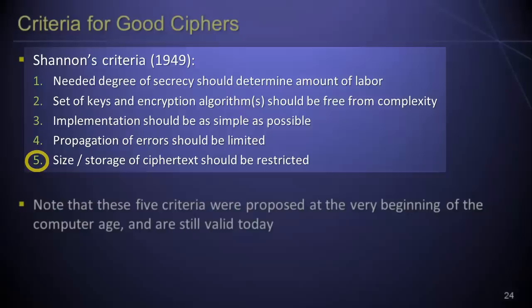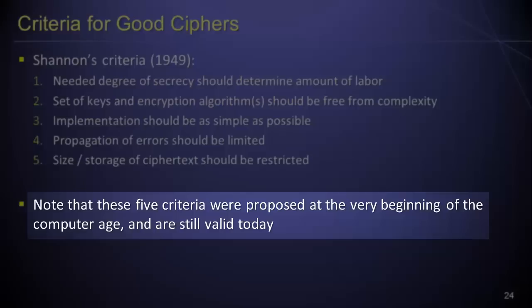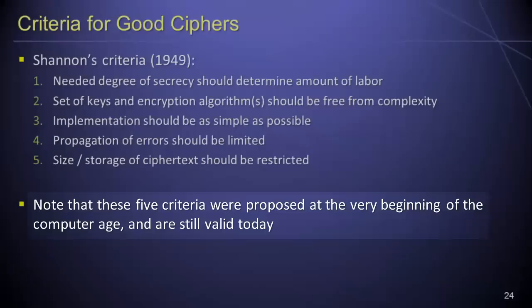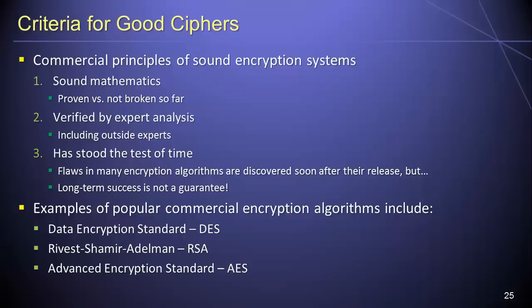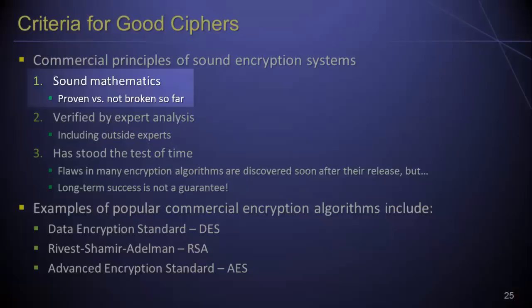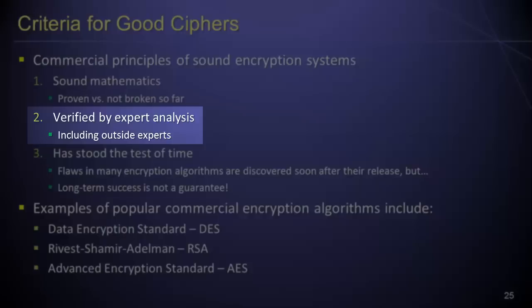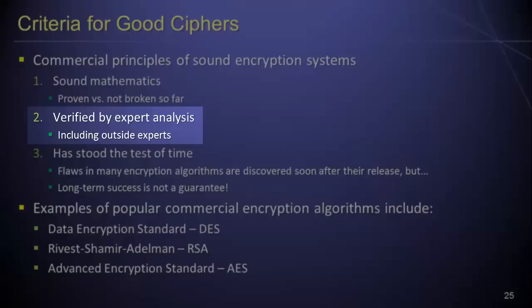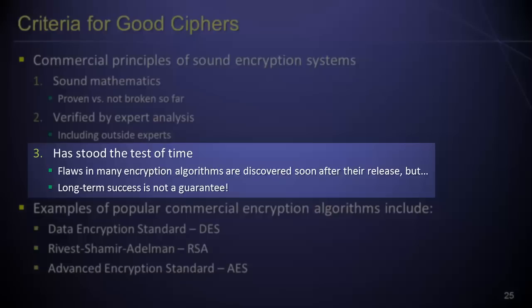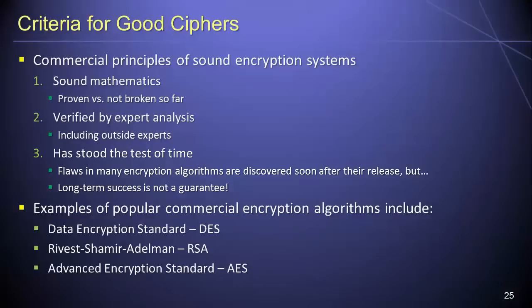It is interesting to note that these five criteria were proposed at the very beginning of the computer age and are still perfectly valid today. In addition to Shannon's criteria, there are several additional criteria for good ciphers that are desirable from a commercial perspective. First, a commercially viable cipher must have a sound mathematical basis. Second, the security of a cipher must be verified through expert analysis — critically by disinterested third parties — before it is used commercially. Third, a commercially viable encryption algorithm must stand the test of time, since flaws in many algorithms are discovered soon after their release, and even long-term success is not a guarantee of perpetual success.